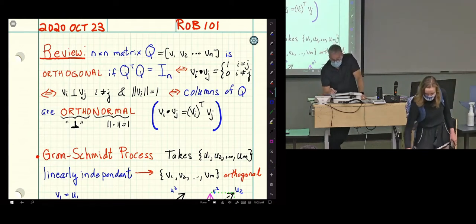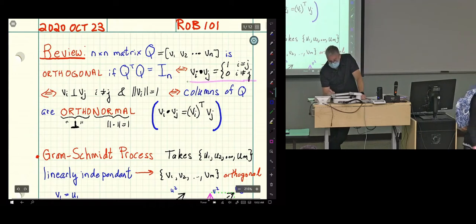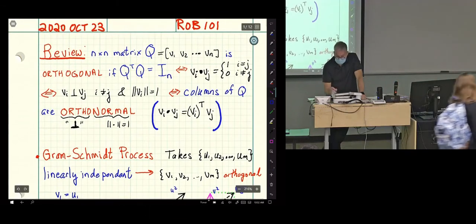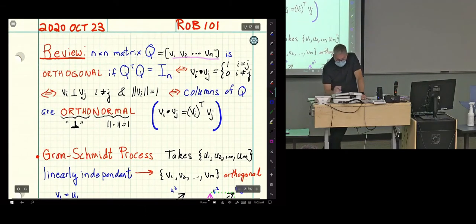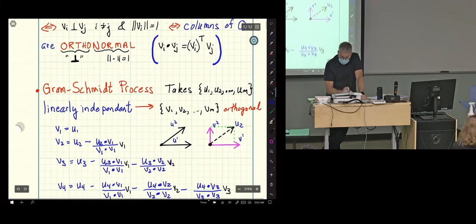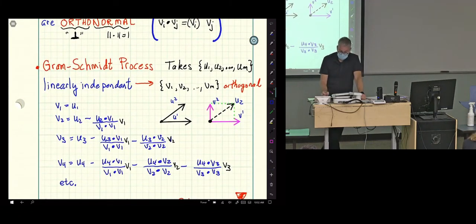Some of you will like to write that condition in terms of the dot product. Others will prefer to write it as V_i being orthogonal to V_j when i is different from j, and norm of V_i equaling one. Totally up to you.